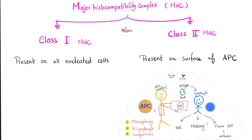The basic idea is simple. The MHC is the tray that the waiter uses to present the food to the customer. Who's the waiter? Antigen-presenting cells — like macrophages, B-lymphocytes, and dendritic cells. What's the food? The antigen — a piece of the bacteria. How do you present the food? On a tray. Who's the tray? MHC — major histocompatibility complex.